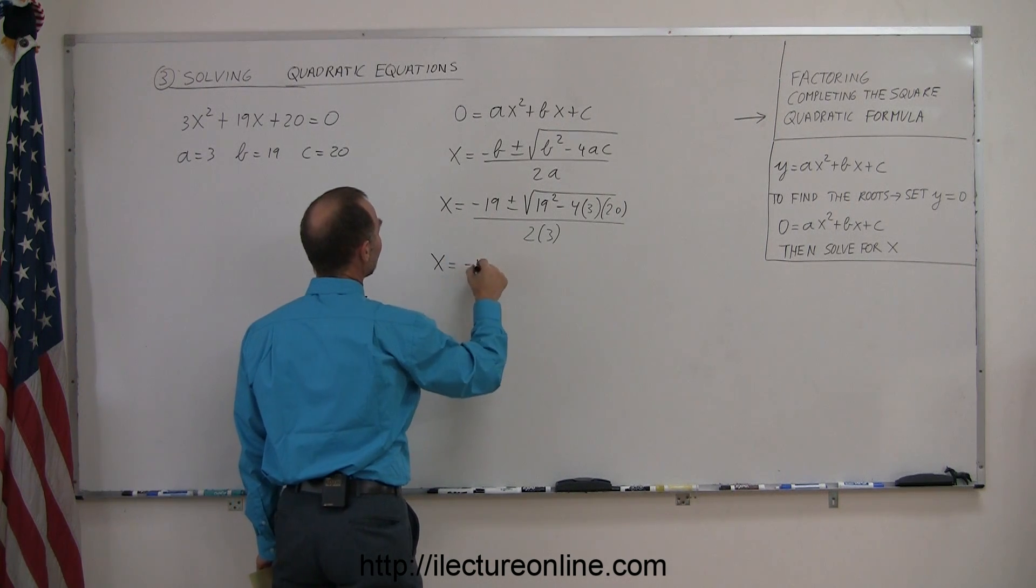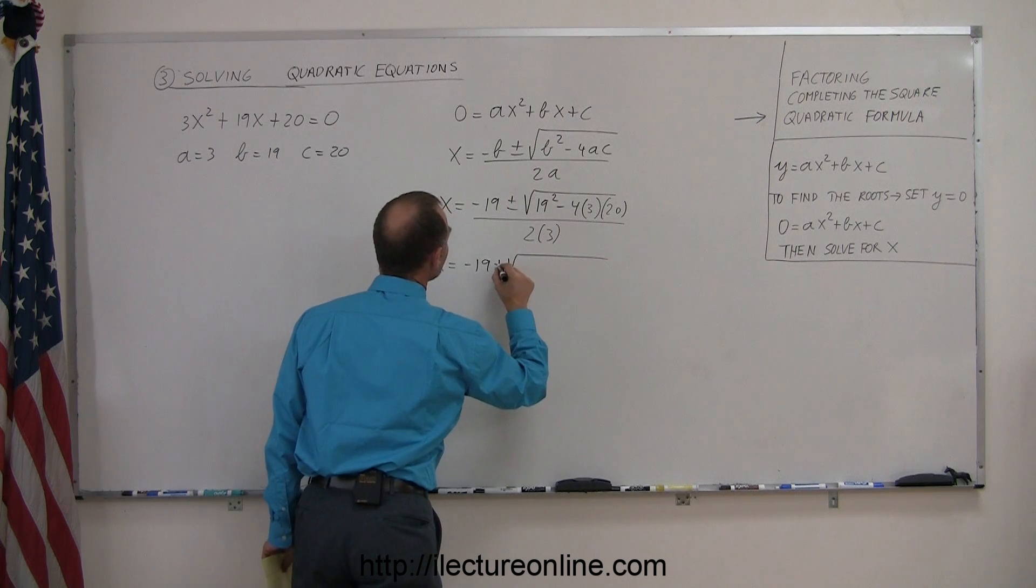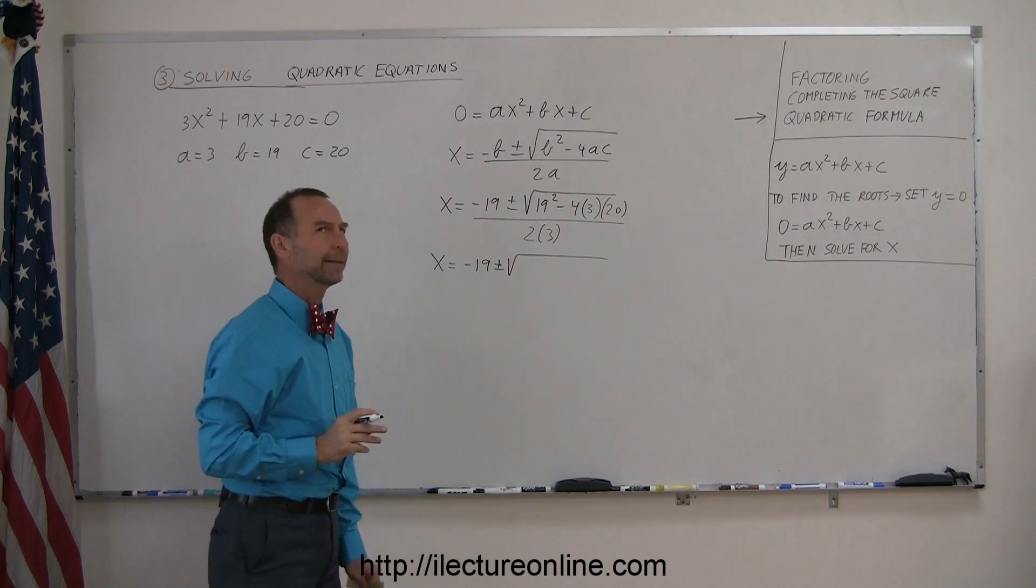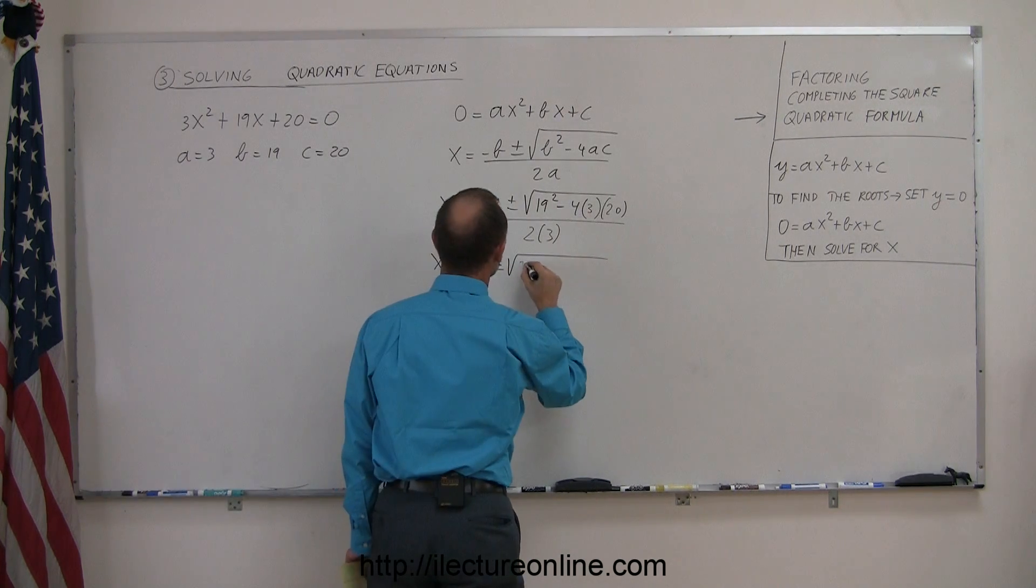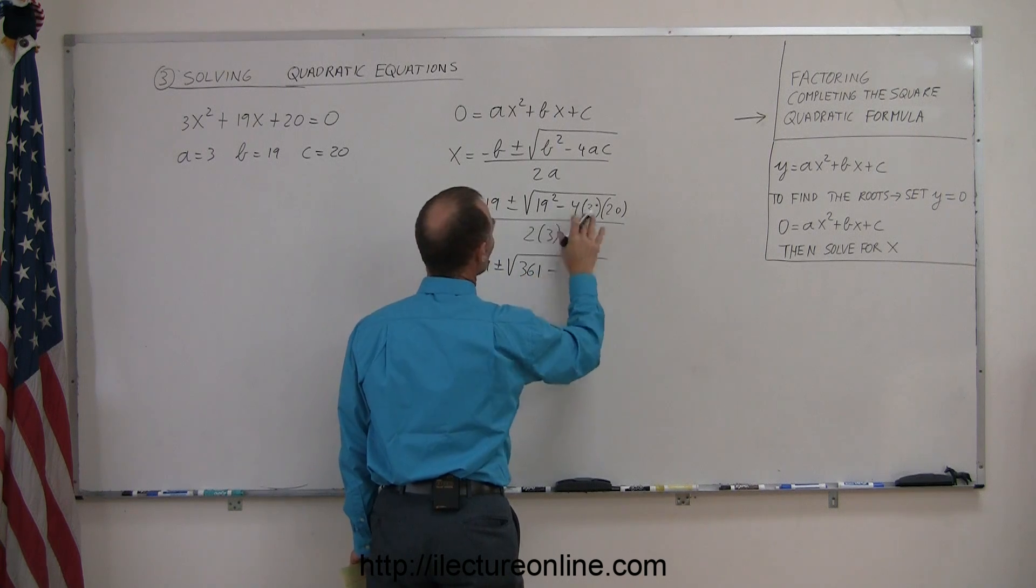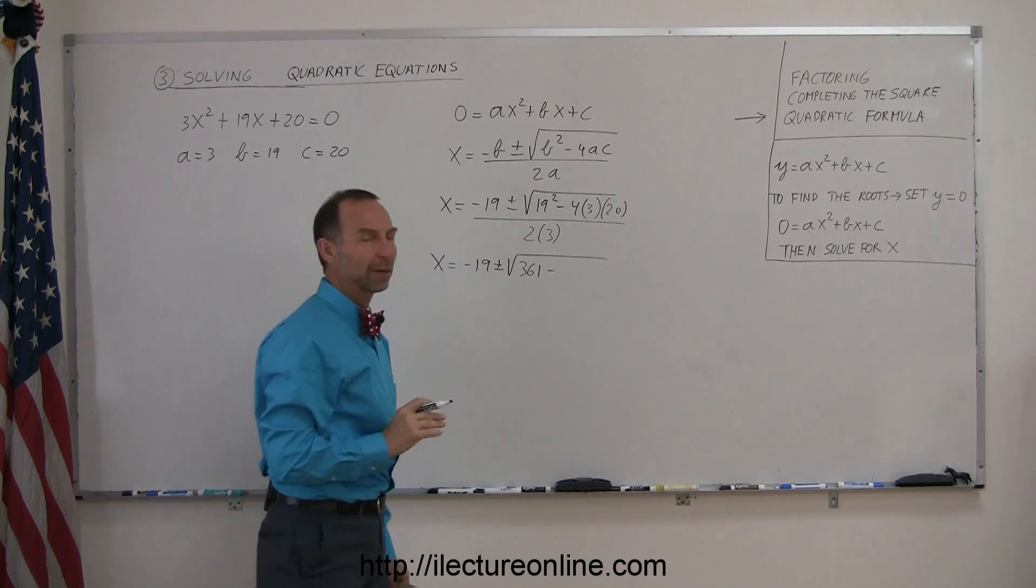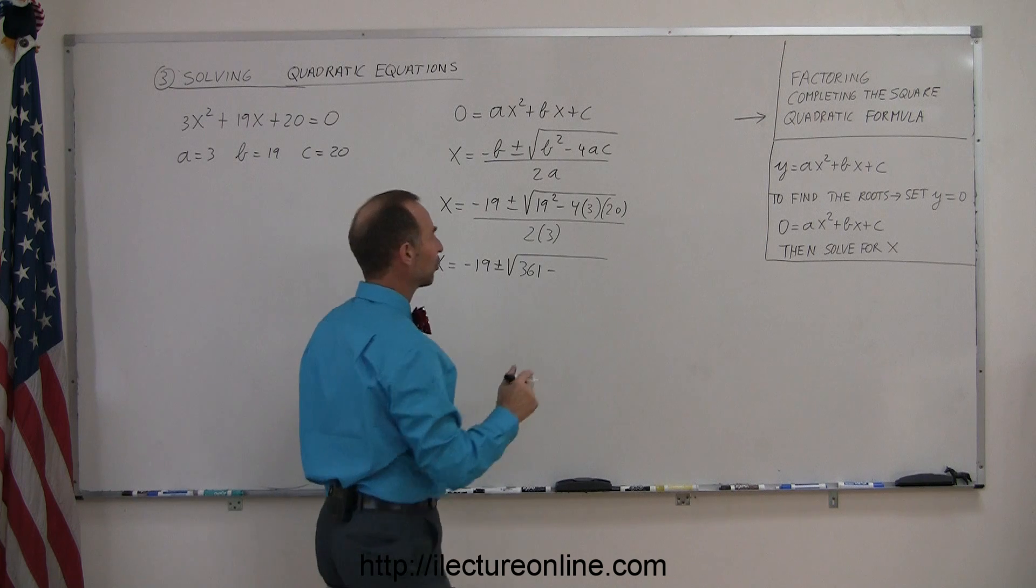x is equal to minus 19 plus or minus the square root of 19 squared, 19 squared, that's 361, minus 4 times 3 times 20, 4 times 3 is 12, times 20, that's 240.